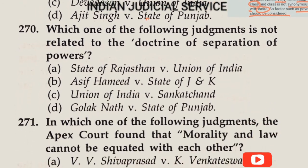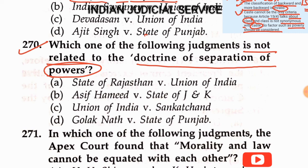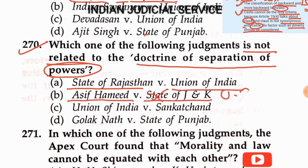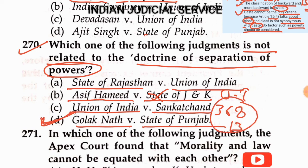Final question of this video — Question number 270: Which judgment is not related to the doctrine of separation of powers? Option A: State of Rajasthan versus Union of India. Option B: Asif Hamid versus State of J&K (now Union Territory). Option C: Union of India versus Sankat Chand. Option D: Golaknath versus State of Punjab. The answer is Option D — Golaknath versus State of Punjab — because it relates to parliament's power to amend fundamental rights, specifically the contradiction between Article 368 and Article 13.